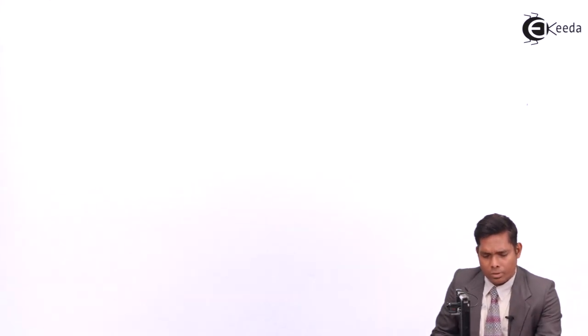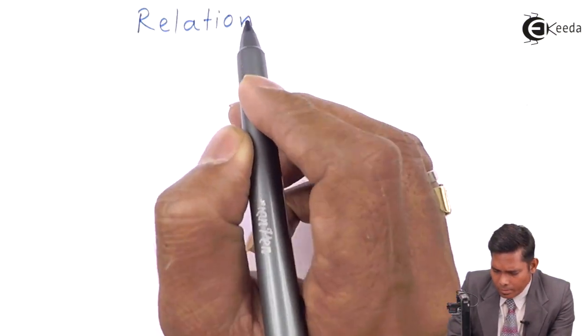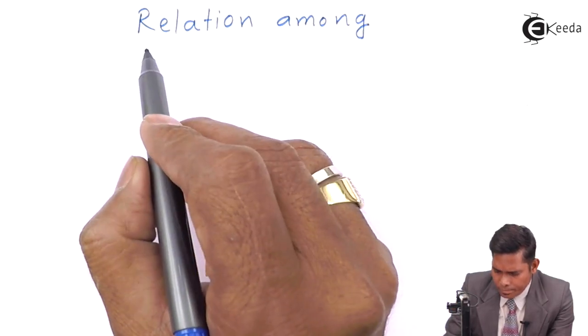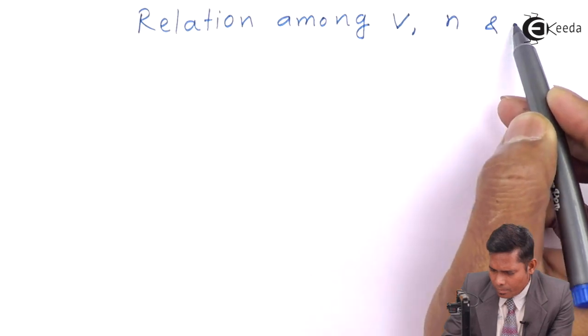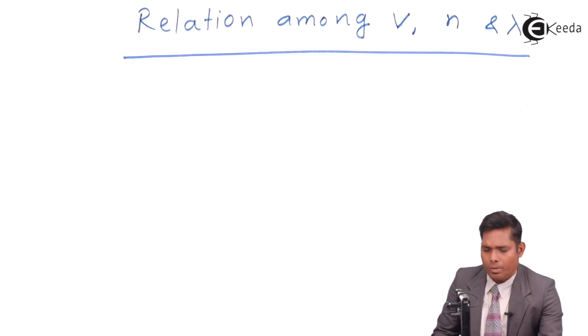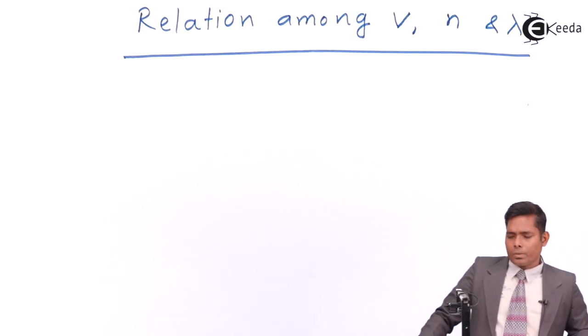First, we will consider a wave and understand the parameters: what is amplitude, what is the time period, what is the frequency, and what do you mean by the velocity of the wave. After that, we will derive the expression for the relation among velocity, frequency, and wavelength.